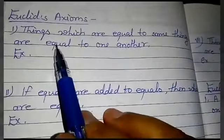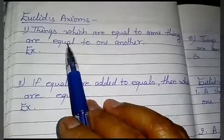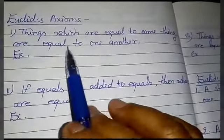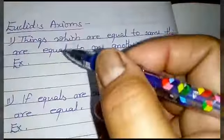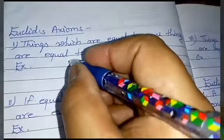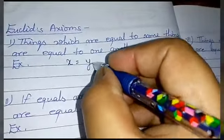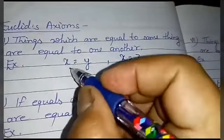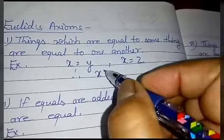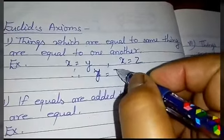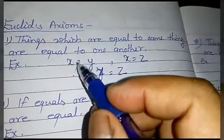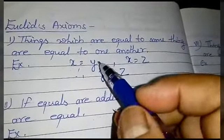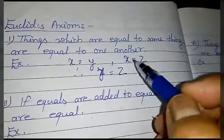Euclid's axioms: there are seven axioms. The first axiom is: things which are equal to the same thing are equal to one another. For example, if x = y and x = z, therefore x = y = z. Things equal to the same thing are equal to each other, so y and z are both equal to x, therefore y = z.